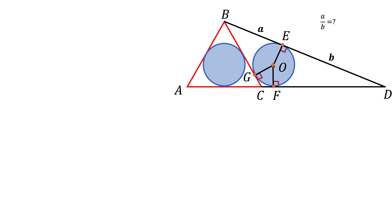Next, we're going to connect the center of circle O with all the vertices of the triangle. Now let's look at triangle FOD, the green triangle, and triangle EOD, the peach triangle. Those two triangles are actually congruent, and side ED equals side FD. To show that: both triangles are right triangles, they share hypotenuse OD, and one leg of each triangle — OE and OF — are the same length, equal to the radius of the circle. By the Pythagorean theorem, with two congruent sides, the third must also be congruent, giving us congruence of the triangles.